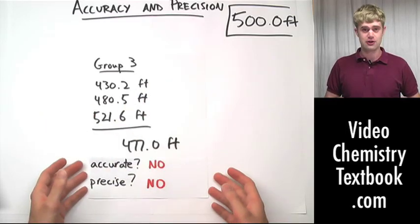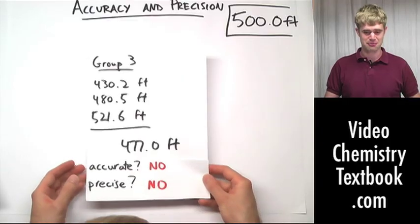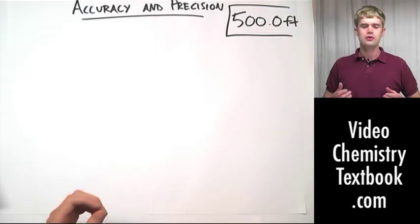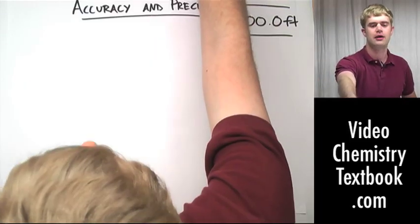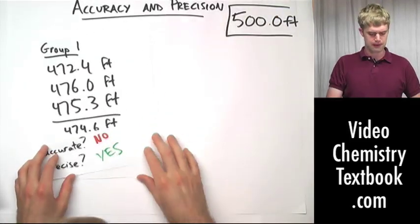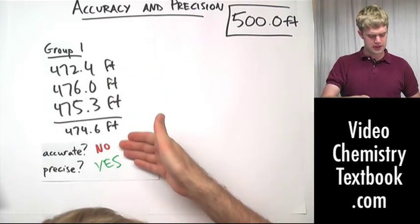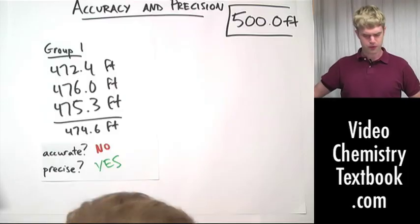These guys are definitely not contenders for my teacher's cash prize. When we talked about accuracy and precision before, we used an analogy of hitting a bullseye target. Let's review that quickly. Group one, we said, was not accurate, but they were precise.